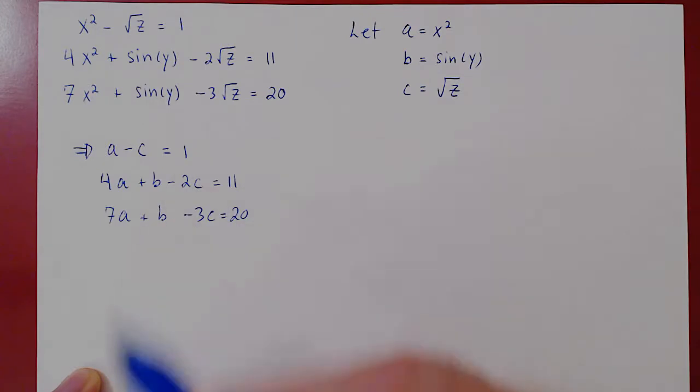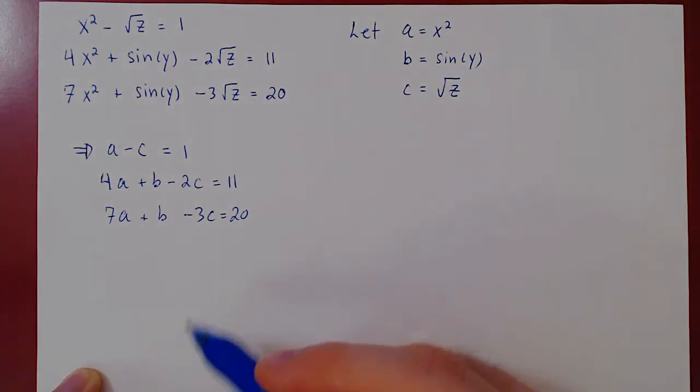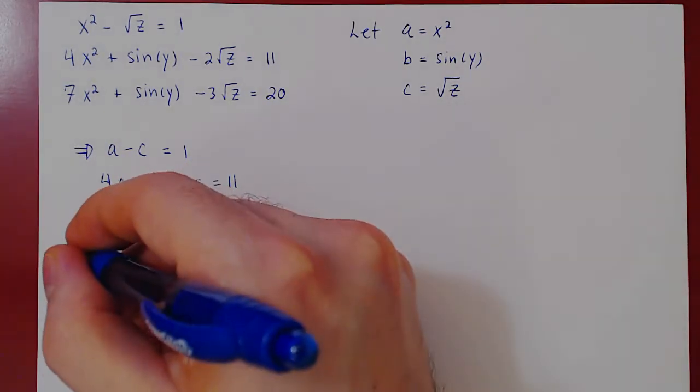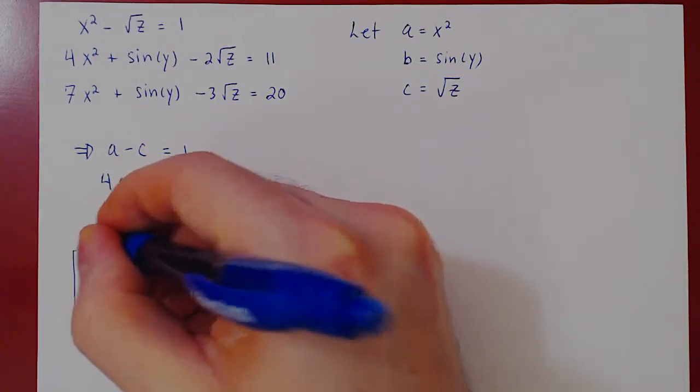And now the system is linear in the variables a, b, and c. And so we can solve for this linear system using row reduction. As always, we first construct the corresponding augmented matrix.